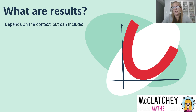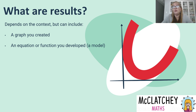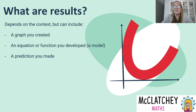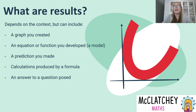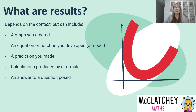Let's think about what the results of an assignment could be. This will depend on the context of your assignment but it can include a number of things. For example, a graph you have created could be one of the results. An equation or a function that you developed is called a model, and that might be part of your results. If you've made a prediction that answered a question of the assignment, that's part of your results. Calculations produced by formulas are part of your results, as is the answer to a question posed, such as 'do Australians drink enough water?'